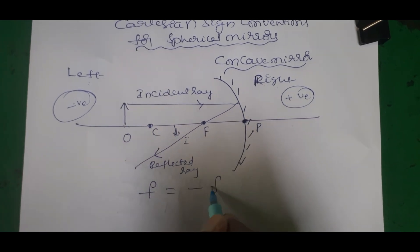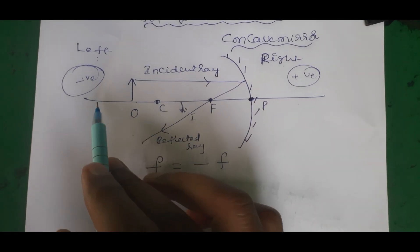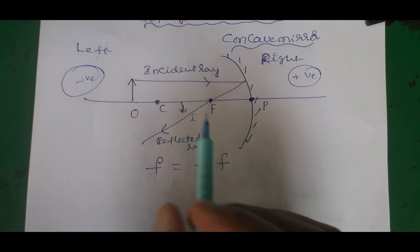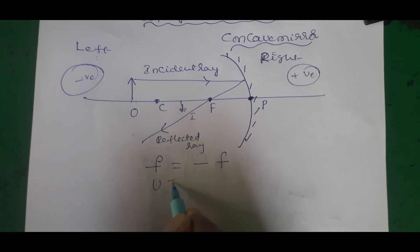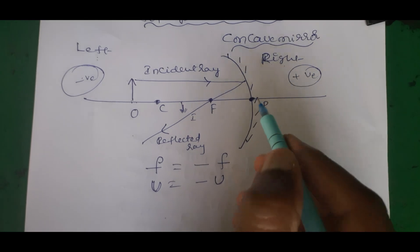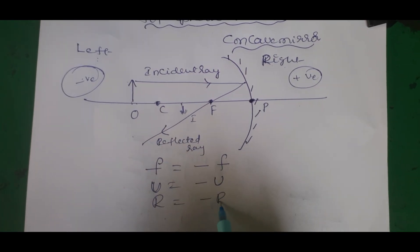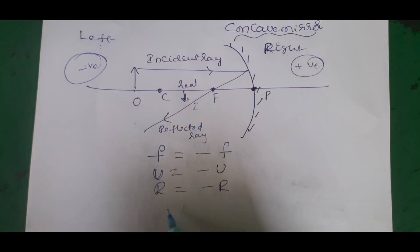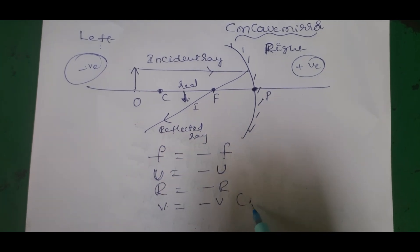For a concave mirror, the focal length is on the left side of the pole, so focal length f is minus. The object is also on the left side, so object distance u is minus. Radius of curvature is also on the left side, so radius R is minus. If a real image forms on the left side, image distance v is also minus.